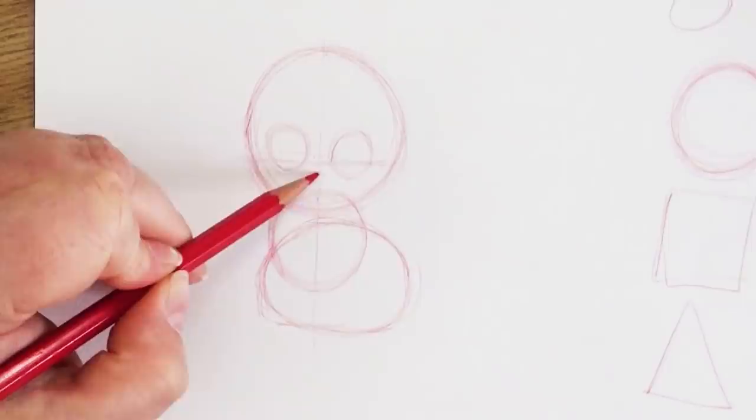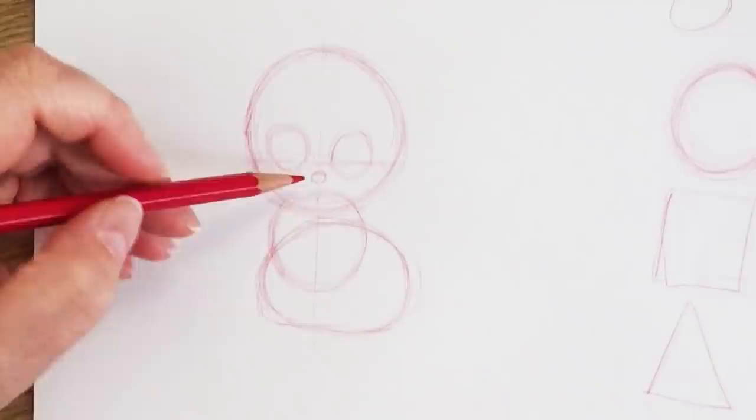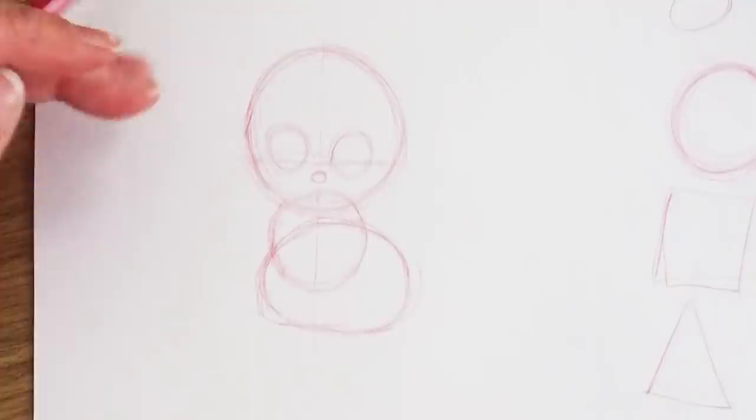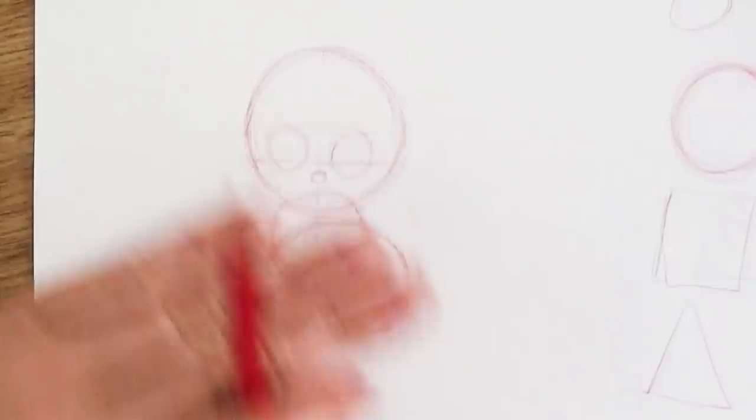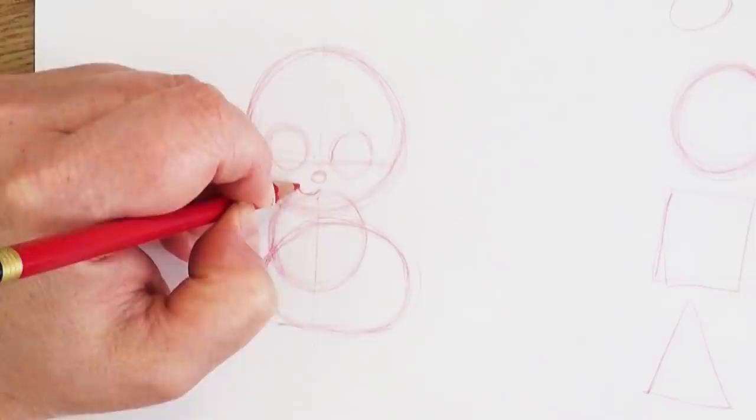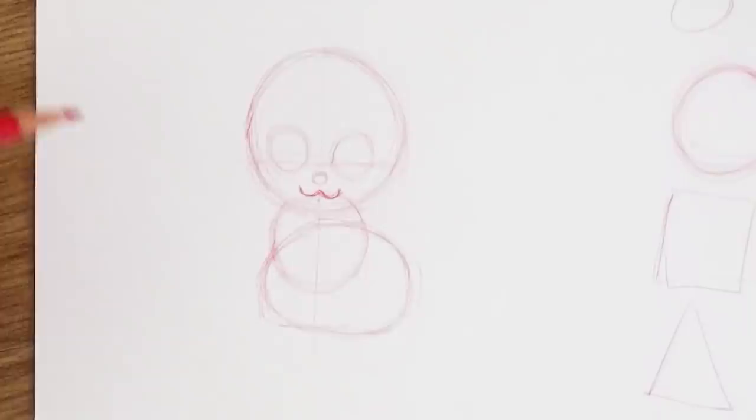He could be a cat, a bunny, a mouse, a dog, a raccoon, a squirrel, a pig. Just by adding different details, you could change this into anything. That's why this is so fabulous for making a fun little creature. Adding your own personal little touches to this can really change things around. Now I'm going to give him a little mouth, like a little flattened W shape right there. Definitely looking like a bunny.